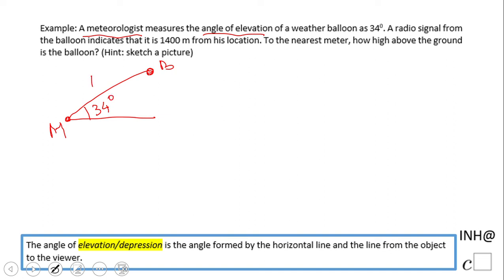We know this distance is 1400 meters. They ask us, to the nearest meter, how high above the ground is the balloon. So they're asking for this height. This is a right triangle.